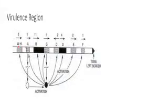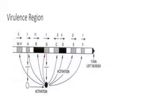Vir A is the first thing that is activated. When a plant is wounded, it secretes acetosyringone, and the agrobacterium senses it. The sensory protein is Vir A, encoded by the virulence region. When it senses the signal, it autophosphorylates and activates the Vir G region. Vir G gets activated and phosphorylates further, activating the entire set of vir genes. This is the requirement for the activation cascade.